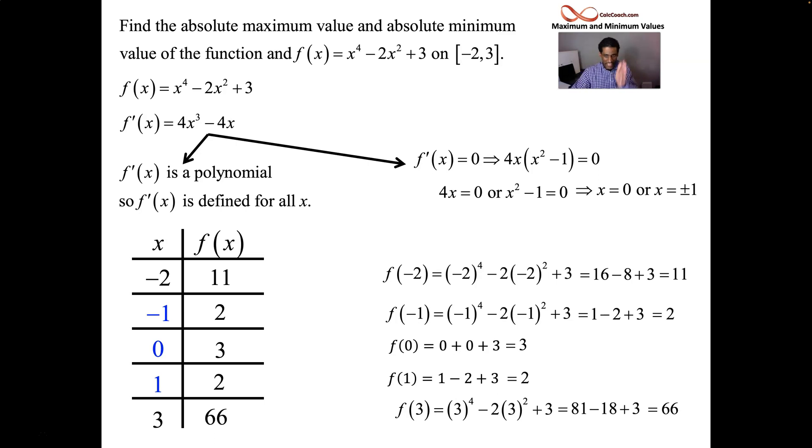Look down that list. The smallest of those values is 2. It occurs twice. Who says it's only going to occur once? It could occur more than once. So both of those values of 2, 2 is your absolute minimum value of your function on that interval, and 66 is your absolute maximum value of your function on that interval. Great.